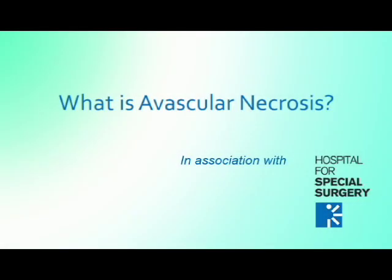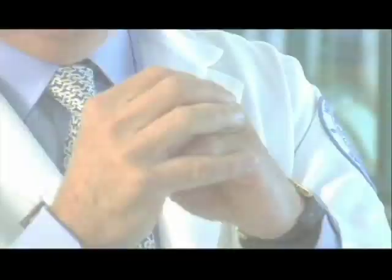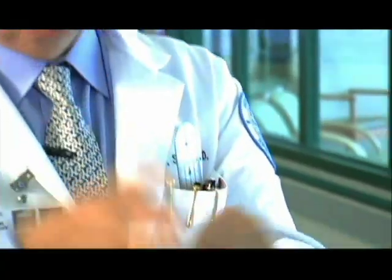Avascular necrosis talks more about bone. Avascular means there's no blood flow, and if you lose the blood flow to bone, the bone will die. In the case of the hip, we're talking about the ball, or the femoral head. The way I like to describe it to a patient: it's like you had a ping pong ball and you took your thumb and put a depression in the ball. That's what avascular necrosis is — a depression in the head, bone dies, bone collapses, the cartilage covering gets lost, the support system fails, and then the cartilage collapses.